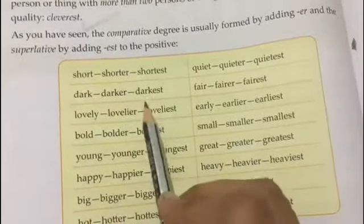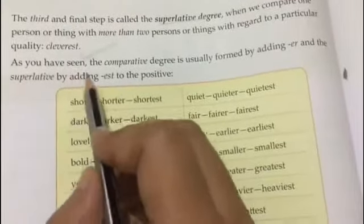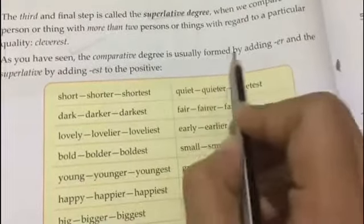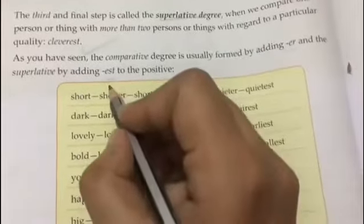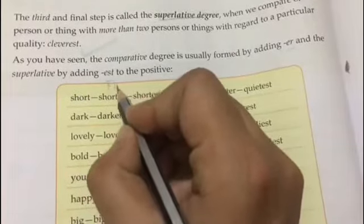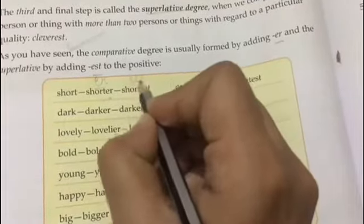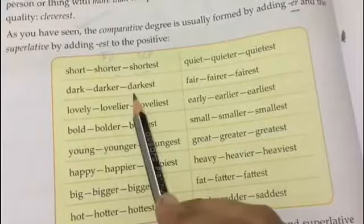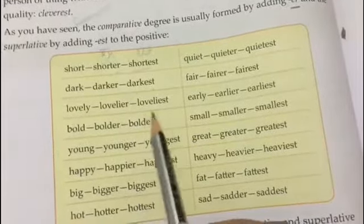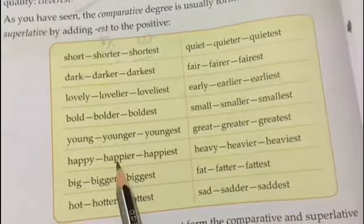Looking at the chart: comparative degree is formed by adding -er and superlative by adding -est. Examples: short, shorter, shortest; dark, darker, darkest; lovely, lovelier, loveliest; bold, bolder, boldest; young, younger, youngest; happy, happier, happiest.